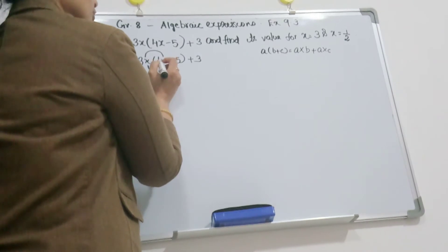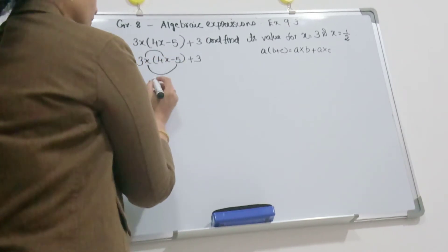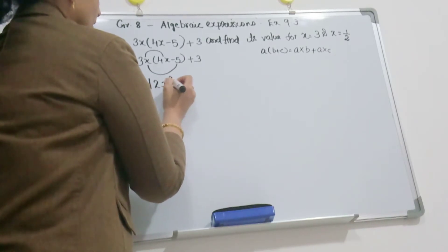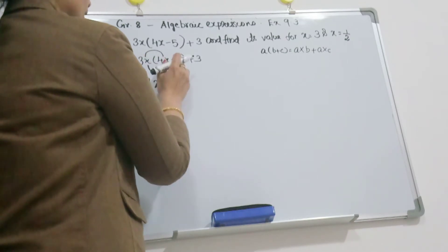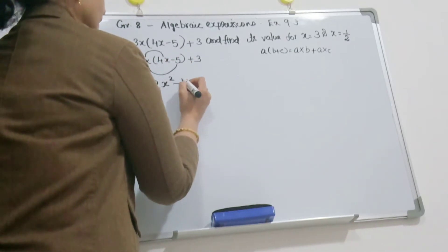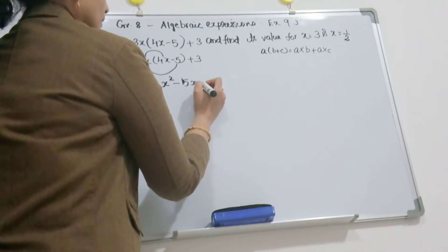Minus 3 into x into 5, 3 into 5 is 15, so 15x plus 3. So this is the simplified expression.